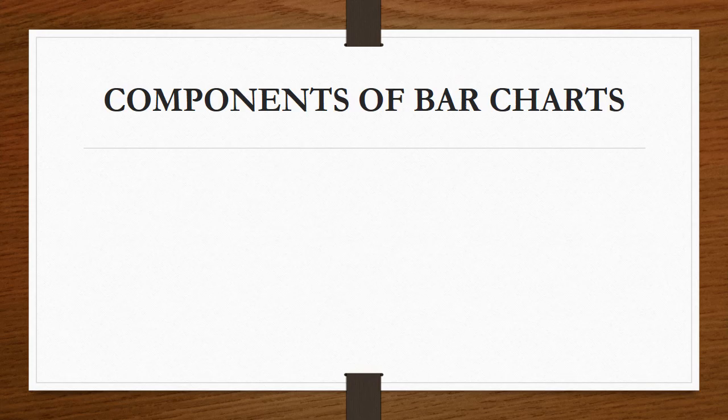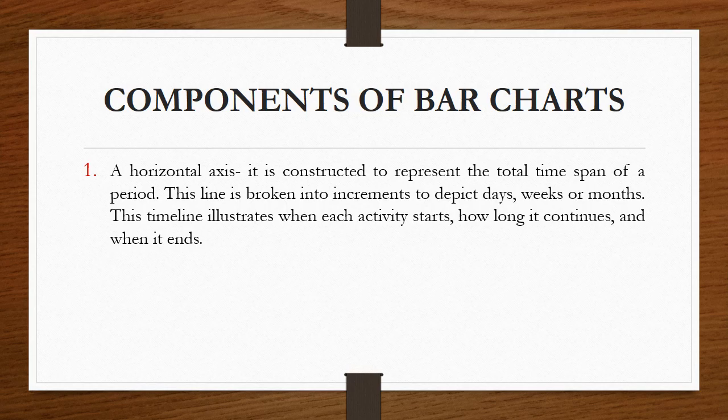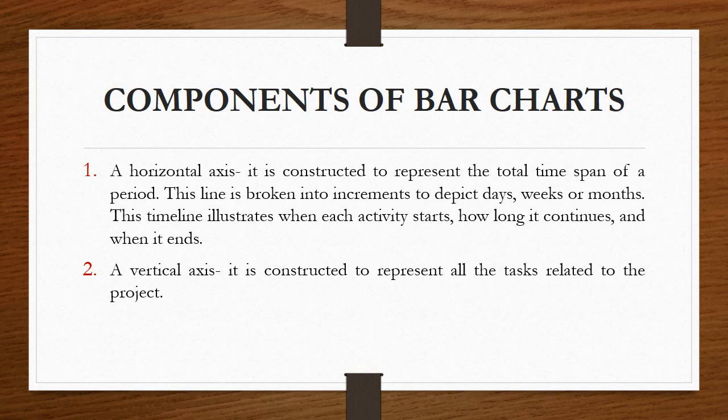Next is the components of bar charts. The bar chart has a horizontal axis. It is constructed to represent the total time span of the period. This line is broken into increments to depict days, weeks or months. This timeline illustrates when each activity starts, how long it continues and when it ends. The second component is the vertical axis. It is constructed to represent all the tasks related to the project. So a bar chart has a horizontal axis as well as a vertical axis. The horizontal axis represents the time which may be represented in terms of days, weeks or months. And the vertical axis represents the various activities in a particular project. The activities are shown as bars.